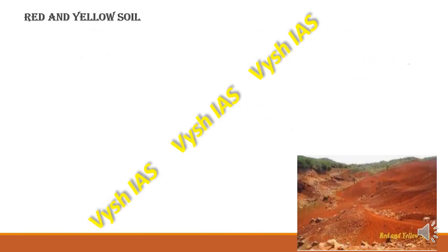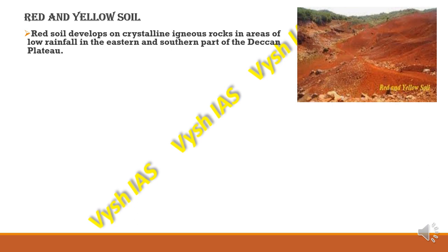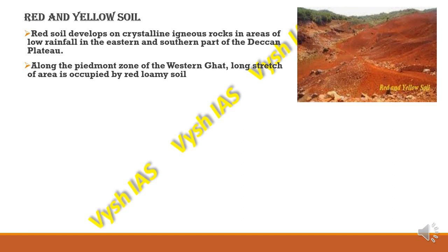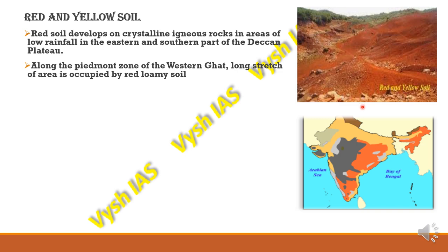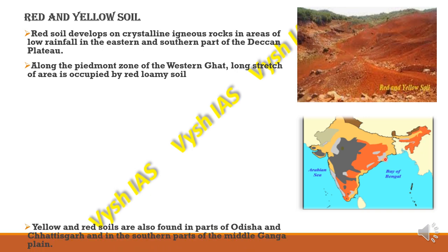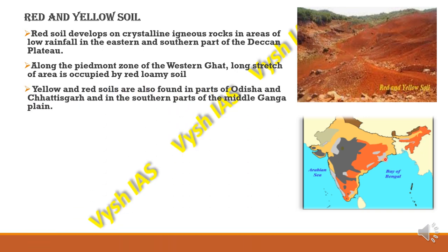Red and yellow soil is mainly developed because of crystalline igneous rocks in areas of lower rainfall in the eastern and southern part of the Deccan Plateau. They are found along the Piedmont zone — the foothills or base of the mountain — of the Western Ghats. Long stretches are occupied by red loamy soil. These soils are also found in parts of Odisha, Chhattisgarh, and the southern parts of the middle Ganga plain.